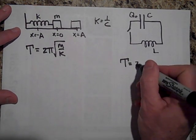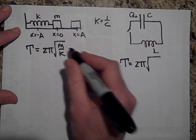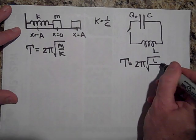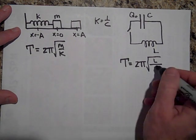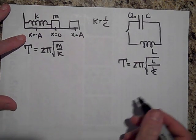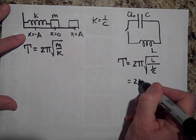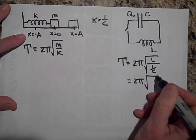And so the period for this is going to be 2π times the square root of m, but m is L over k, and k is 1 over C. So as you might guess, that comes up—that just turns out to be 2π times the square root of LC.